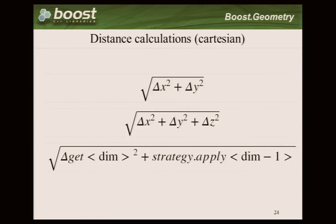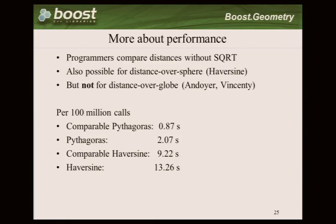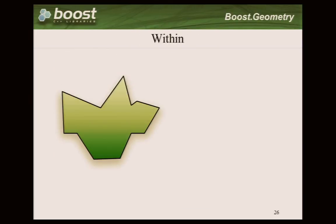For distance, programmers usually leave out the square root because it's very slow, and if you compare distances it's not necessary. We can do that for Pythagoras of course, but also for Haversine, then it's also somewhat faster. So you have a fast distance over the earth.